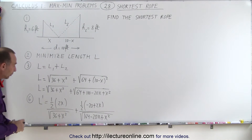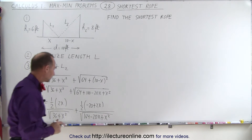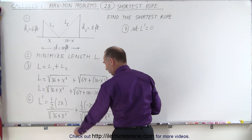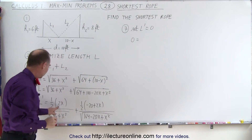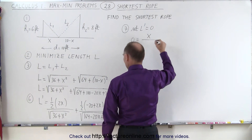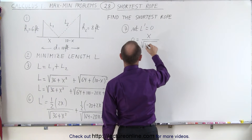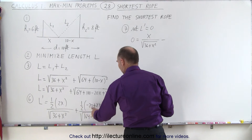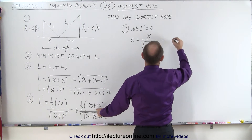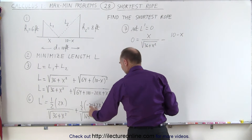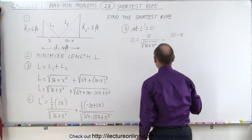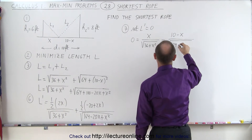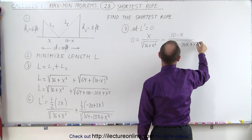Now we have the derivative of the length. We're going to set that equal to zero and solve for x. Setting L' equal to zero: we have zero equals one half times 2x — the halves cancel — giving x divided by the square root of 36 plus x squared, minus 10 minus x divided by the square root of 164 minus 20x plus x squared.